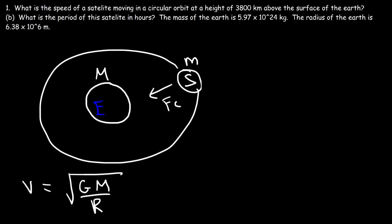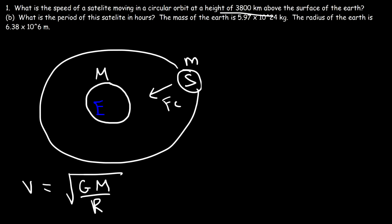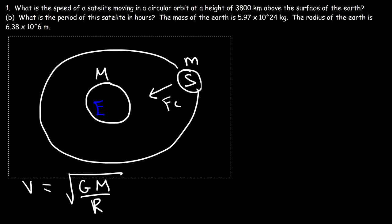Now let's think about what we already know. We know the gravitational constant is a fixed number, and we have the mass of the Earth. What is R in this problem? R is not the radius of the Earth, and it's not the height above the surface of the Earth — it's actually the sum of those two values. Let me draw a better picture to illustrate it.